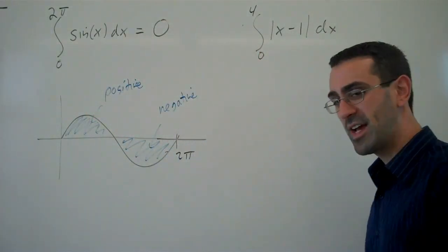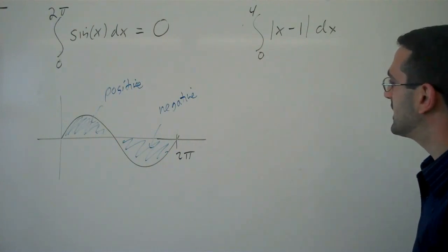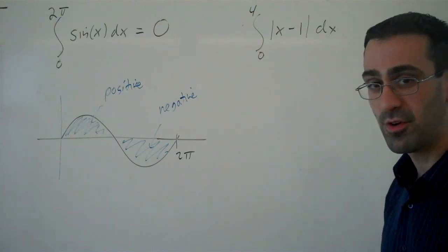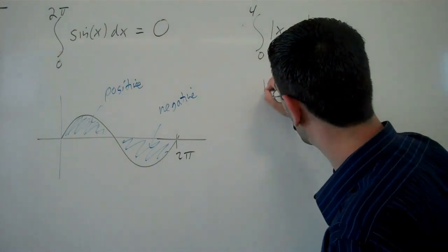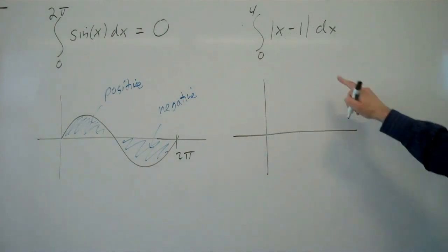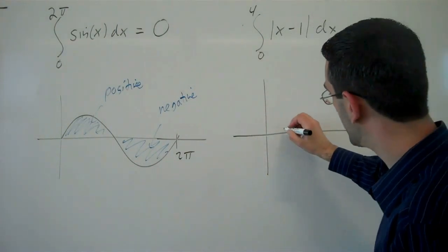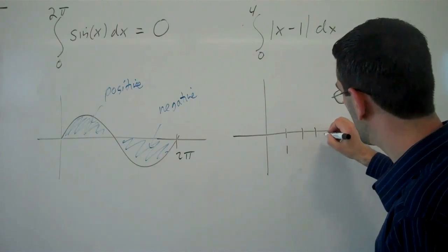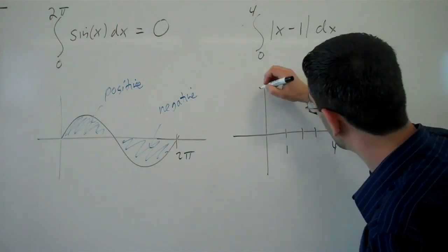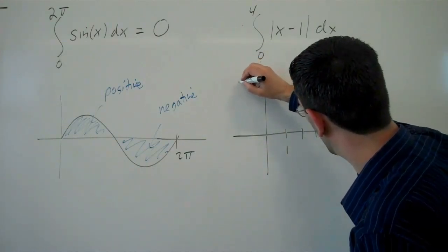Alright, so now let's look at this one. So we're finding the definite integral from 0 to 4 of the absolute value of x minus 1. So if we sketch the absolute value of x minus 1, that's an absolute value function shifted to the right by 1. So we can sketch that in here.